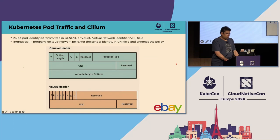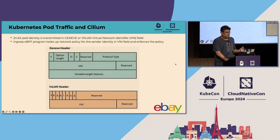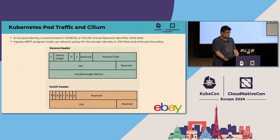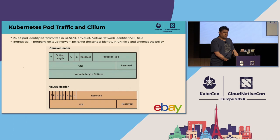Now, what's the story on the wire? When pods communicate using Geneve or VXLAN encapsulation headers, the BPF programs on the sender side store the identity of the sender in the VNI field — the virtual network identifier field. It's a 24-bit field, which means there is a 24-bit constraint on the value of the identity.